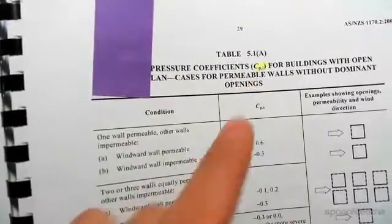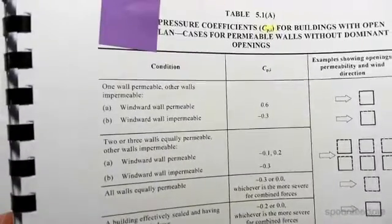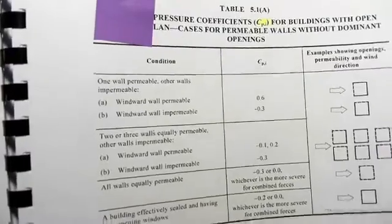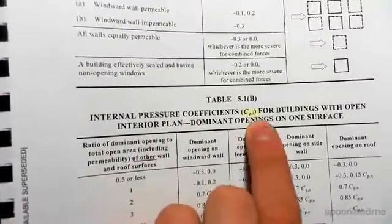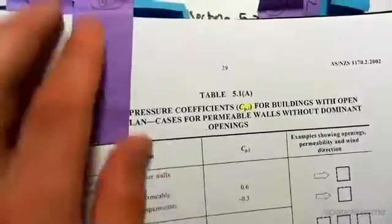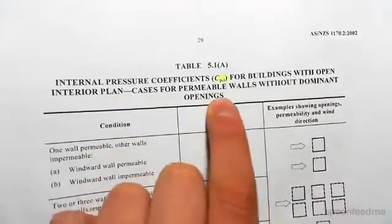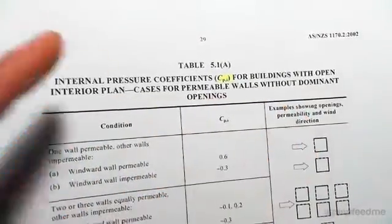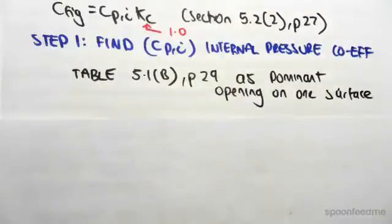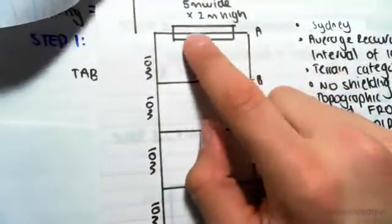Flipping over a couple of pages, we have Table 5.1a and 5.1b. When looking at openings, we have internal pressure coefficients for buildings with a dominant opening on one surface, or internal pressure coefficients for permeable walls without a dominant opening. Looking back at our structure, we had a dominant opening on one wall — a garage door — which was five meters wide.